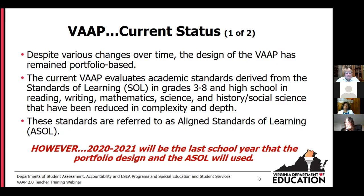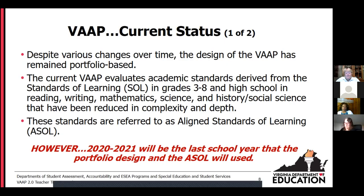Even though there were shifts from IEP goal focus to an academic focus, the design of the VAP stayed the same. It remained a portfolio-based test. Our current VAP is a portfolio-based assessment evaluating academic standards from the Standards of Learning for students in grades three through eight and high school in the content areas of reading, writing, math, science, and history/social science. Those standards have been reduced in complexity and depth and are referred to as the Aligned Standards of Learning, or ASOLs.